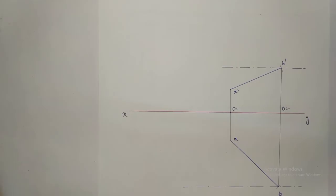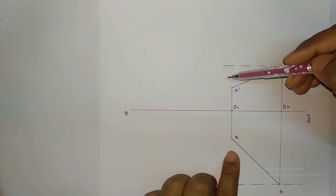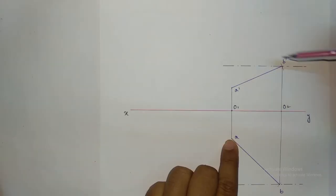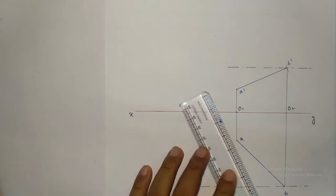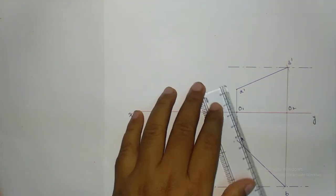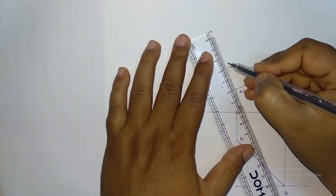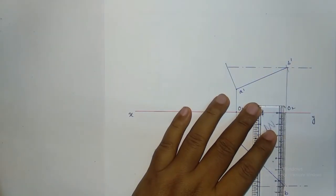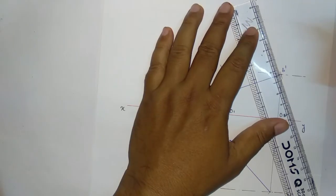I am going to draw a perpendicular on this point and this point. The distance from here to here will be AO1, and from here to here will be O2B. Taking these as distances I am going to draw the perpendiculars. This distance is 25, so I draw a perpendicular of 25. This is 20 and 25, and this other one is 65, so I draw a perpendicular of 65.